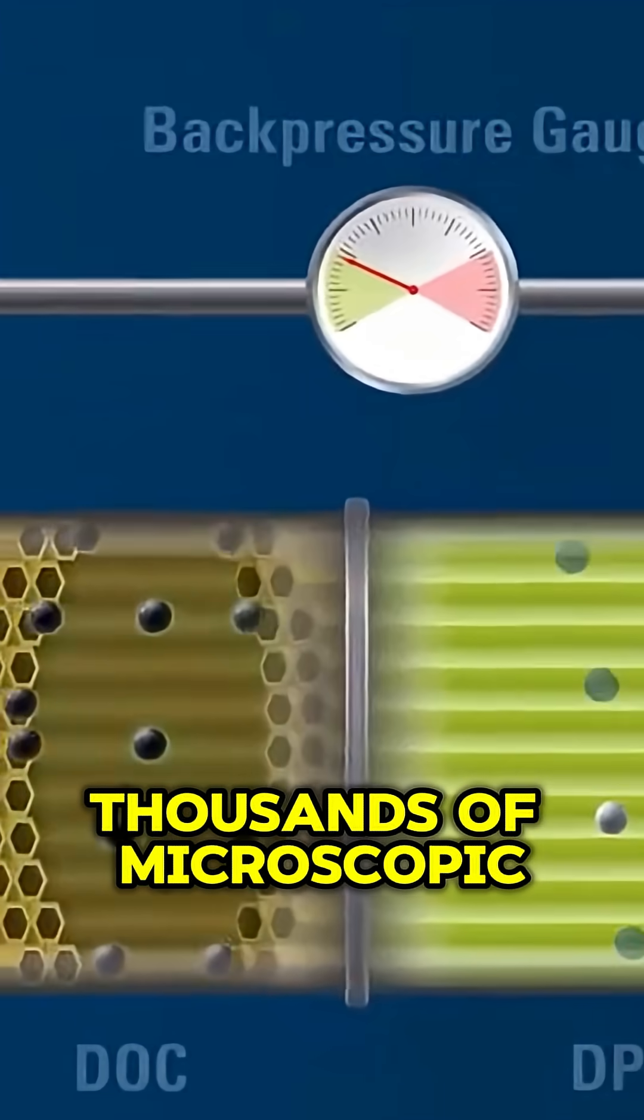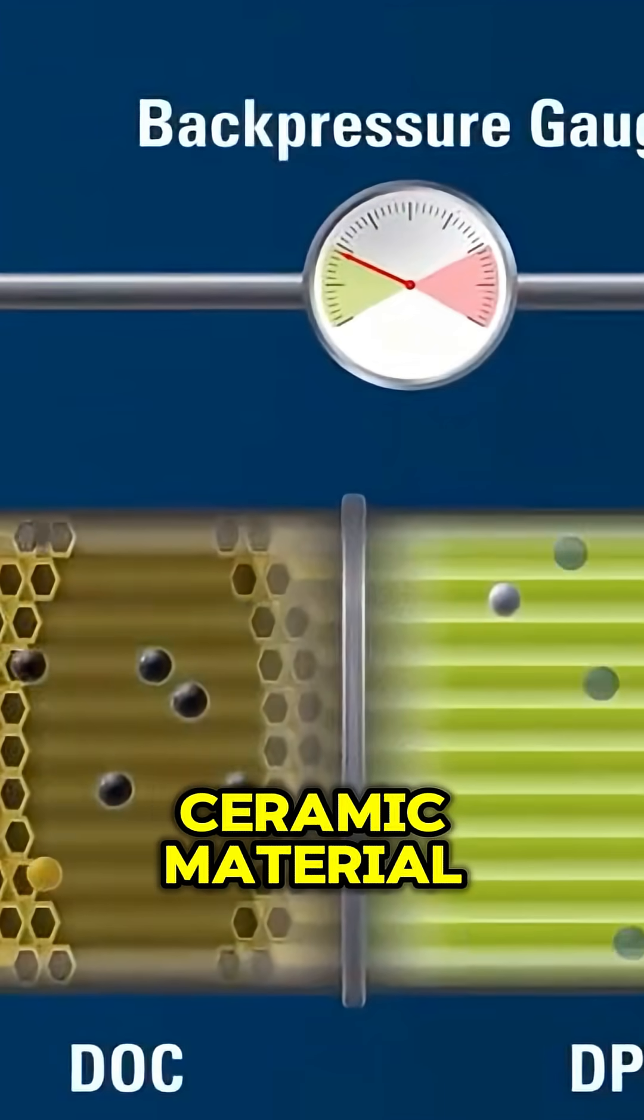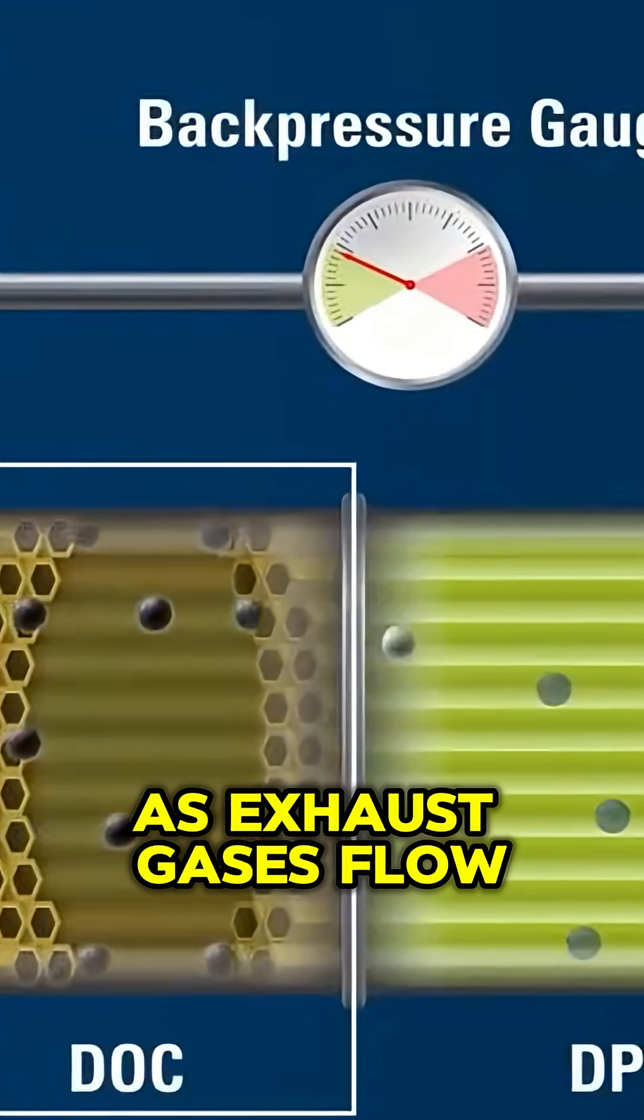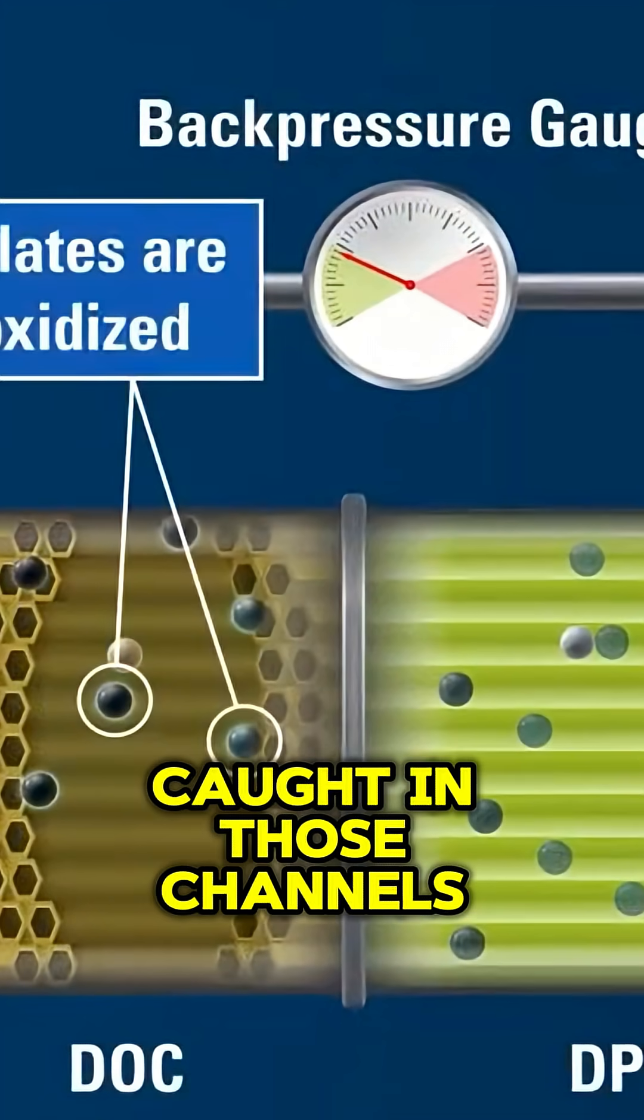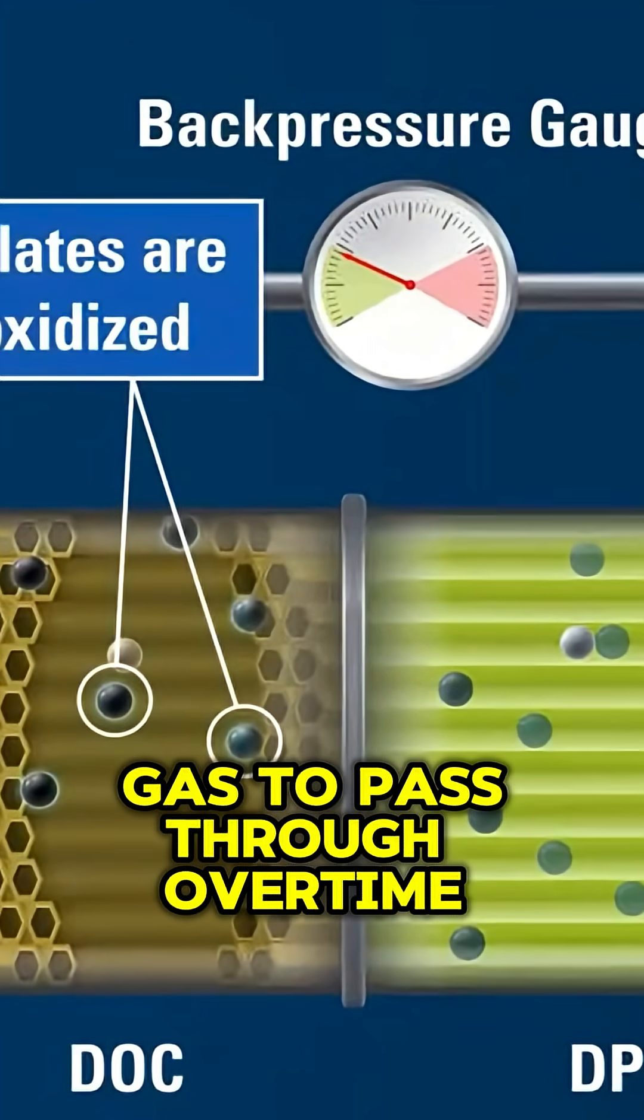Inside the DPF are thousands of microscopic channels made of porous ceramic material. As exhaust gases flow through, the tiny soot particles get caught in those channels, allowing only clean gas to pass through.